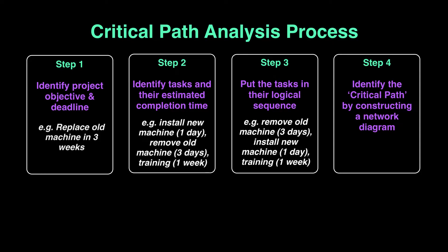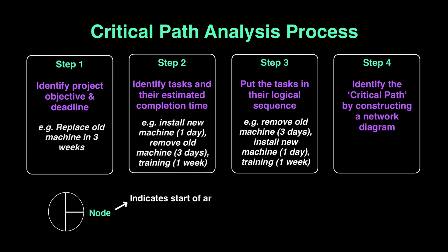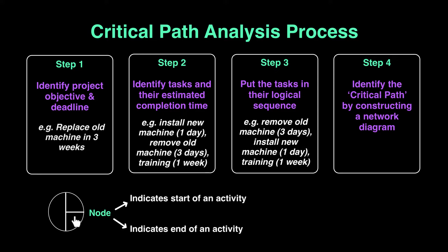The network diagram has two shapes. The first shape is called a node — it's a circle divided into three parts: a full left semicircle and the right side divided into two halves. A node is used to show two things: that an activity is starting from that point, or that an activity is ending at that point. The second shape is a straight line, which represents the activity itself. Together, these two shapes make up our network diagram.